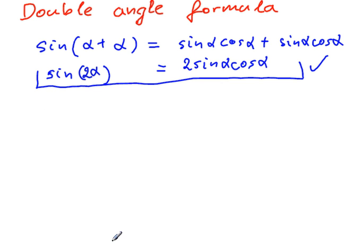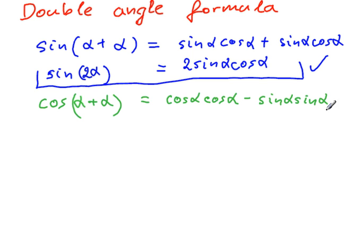Cosine alpha plus alpha. So this is why double angle is one angle added twice. However, if you recall the cosine for the sum. So this is cos alpha cos of the second angle minus sine alpha sine of the second angle, which is also alpha.